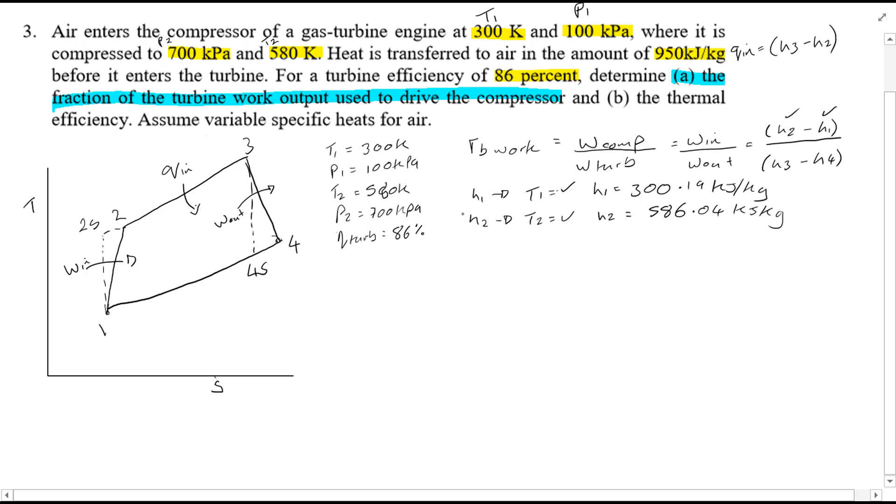Now in order to calculate H3, well Q in has been given, and we know that Q in is equal to H3 minus H2. Having just calculated H2, we can simply rearrange this. H3 is equal to 1536.04 kJ per kg, and of course you can interpolate this. The pressure ratio at 3, which is equal to 474.11.